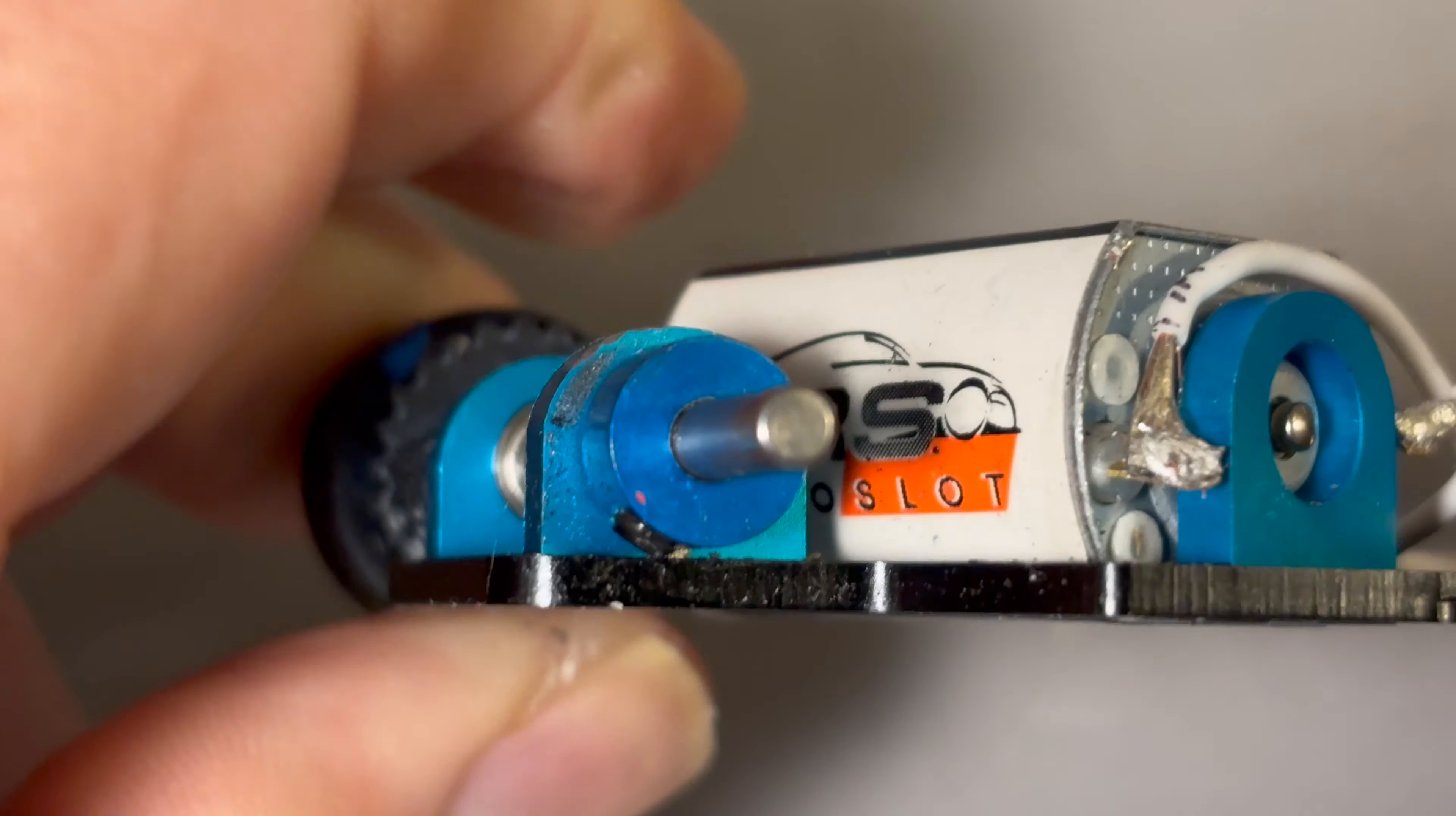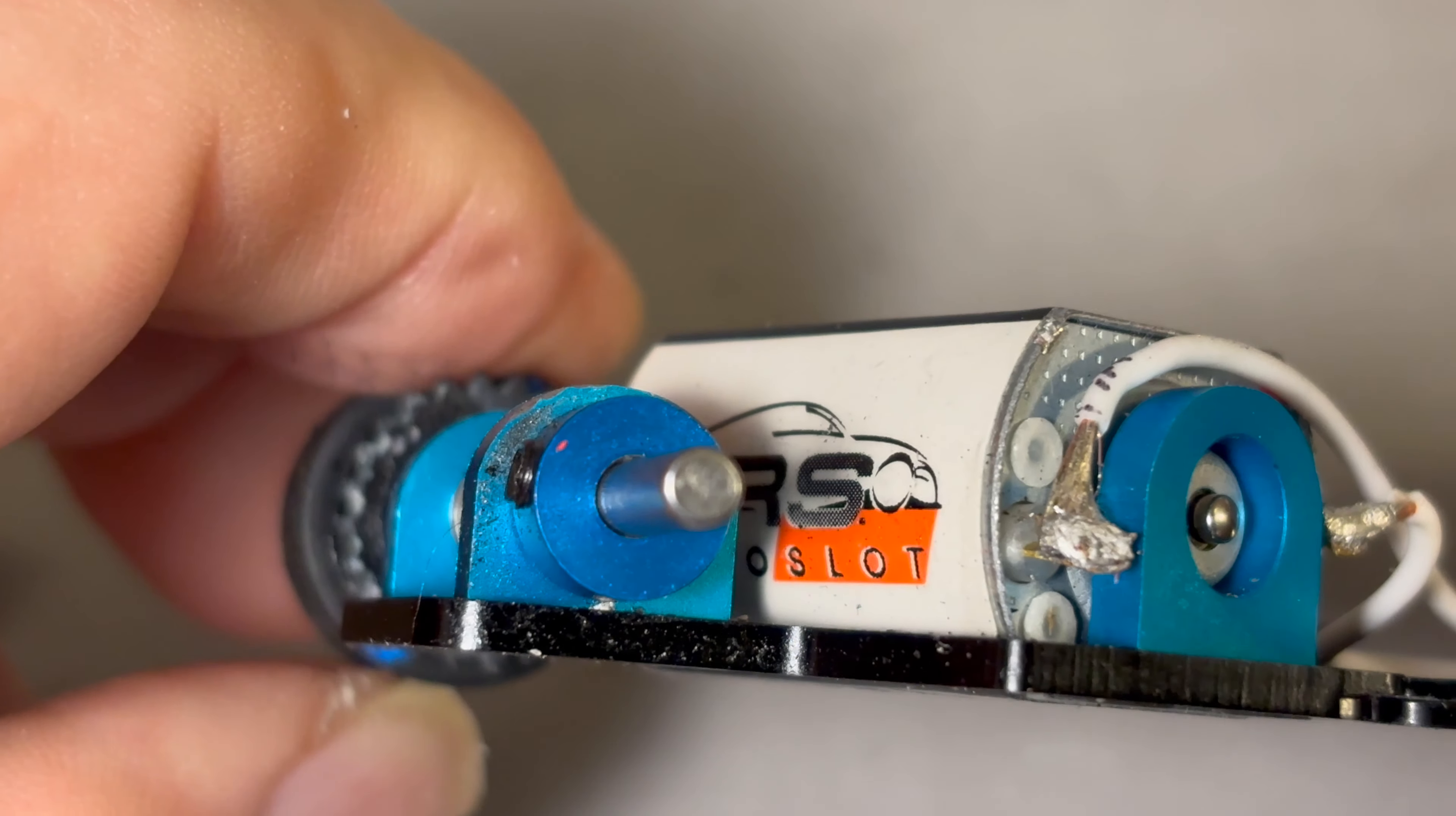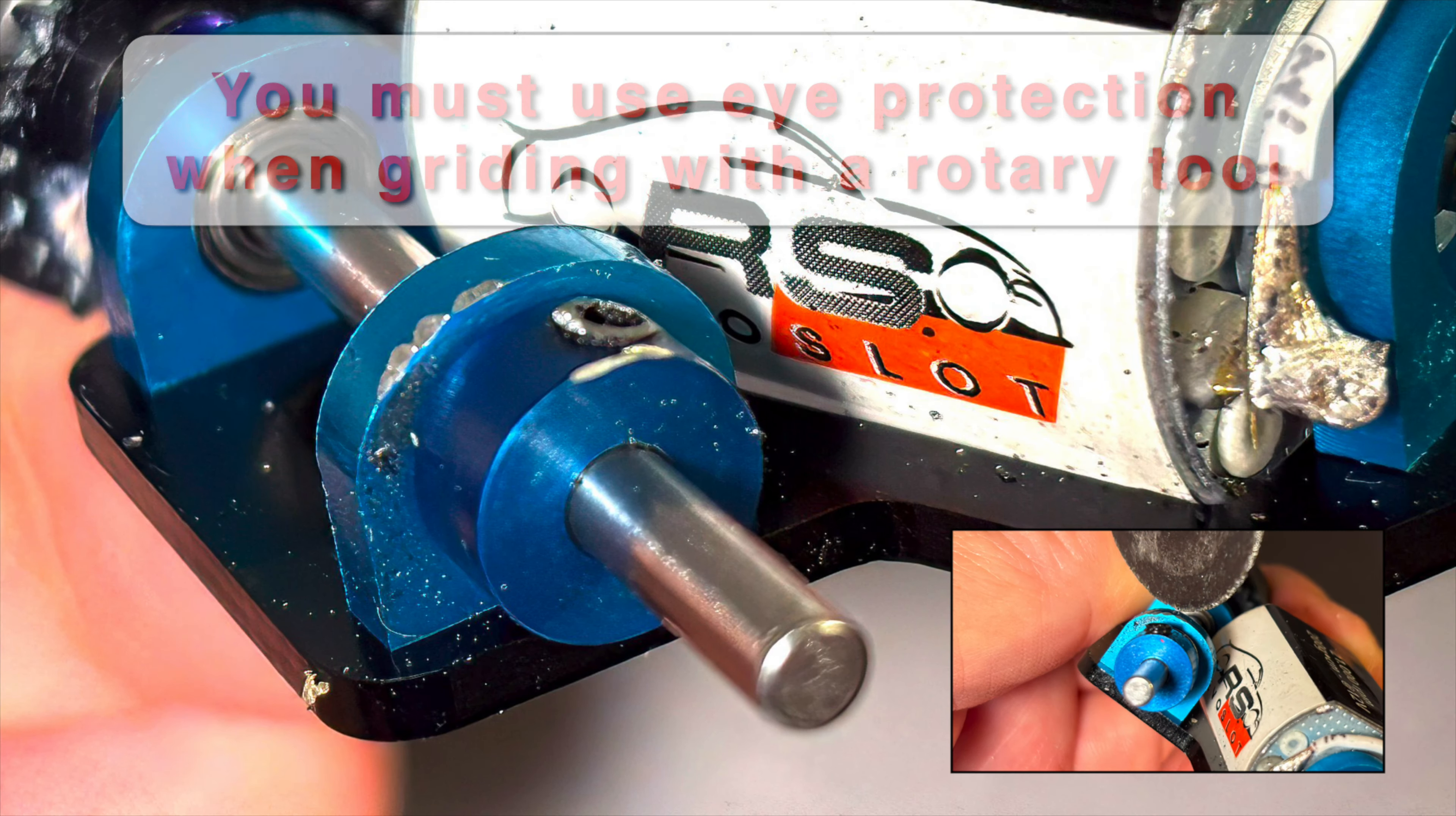When I put the collar on the axle, I noticed that the set screw was actually hitting the chassis. I used a rotary tool to grind the set screw flush with the collar.